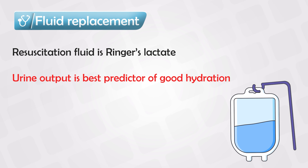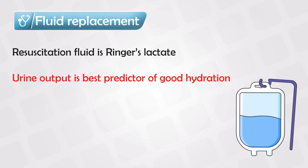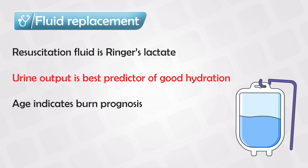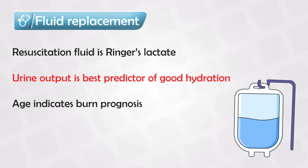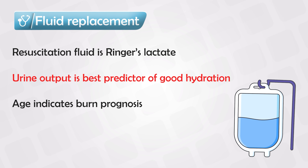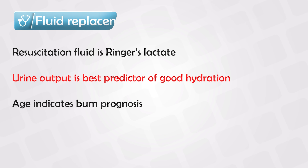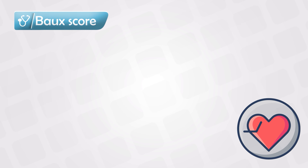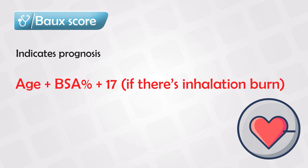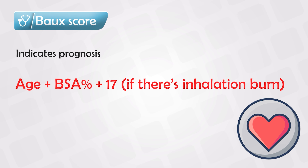To indicate prognosis, we look at the patient's age — the higher the age, the worse the prognosis. After age come comorbidities such as heart failure, kidney disease, and other conditions. There is also the Baux score, which gives a rough number of how likely the patient is to survive. It is calculated as: age plus body surface area plus 17 if there is inhalational injury.